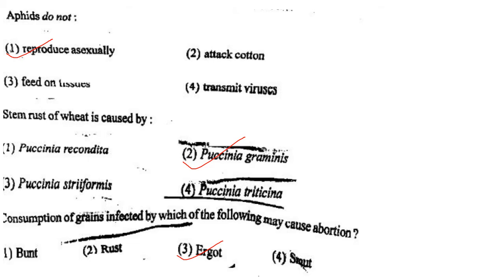Next one: Consumption of grain infected by which of the following may cause abortion? Option 1, bunt; option 2, rust; option 3, ergot; option 4, smut. Answer is option 3: ergot.